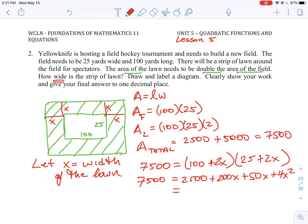We'll look at 7,500 is equal to 2,500 plus 200X plus 50X plus 4X squared. Okay, and if we get that down to a term here, the 2,500 can come over to the other side. So we'll have 5,000, and then this is going to be equal to 250X plus 4X squared.